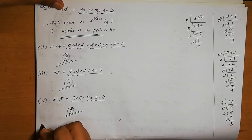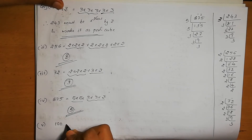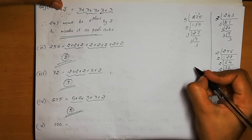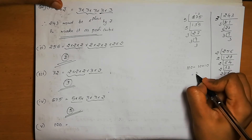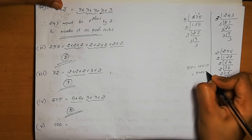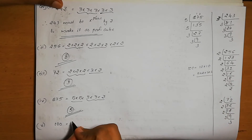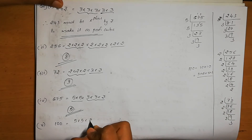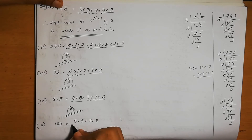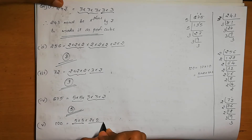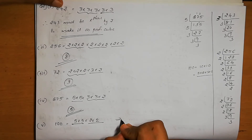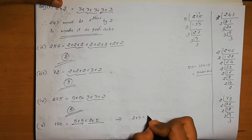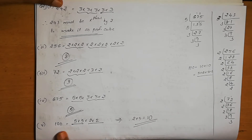Fifth number is 100. Its factors: 100 = 10 × 10 = 5 × 2 × 5 × 2 = 5 × 5 × 2 × 2. One 5 is missing and one 2 is missing. So we multiply by 5 × 2 = 10. Therefore, 100 must be multiplied by 10 to make it a perfect cube.